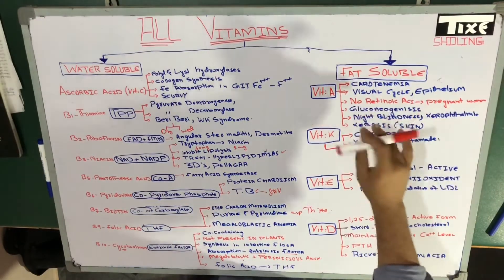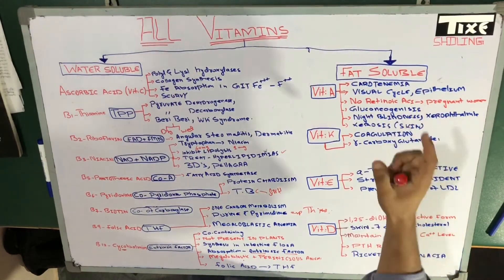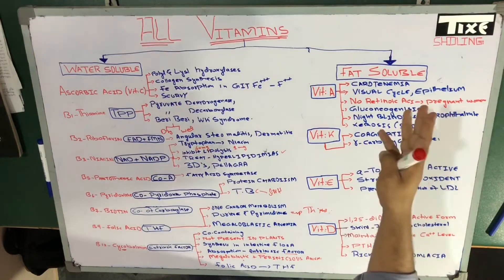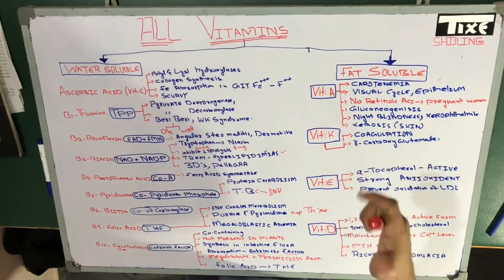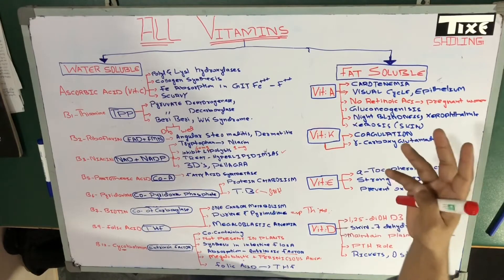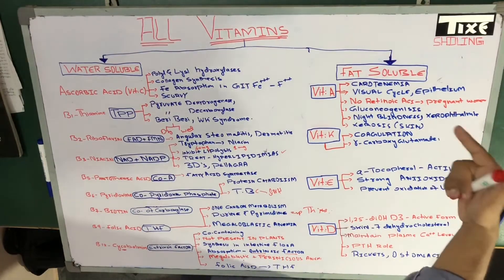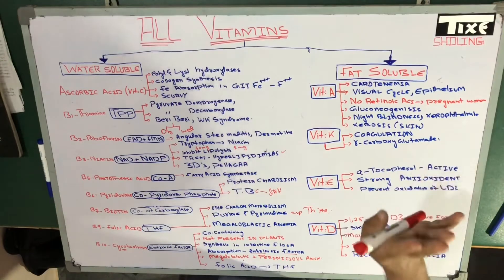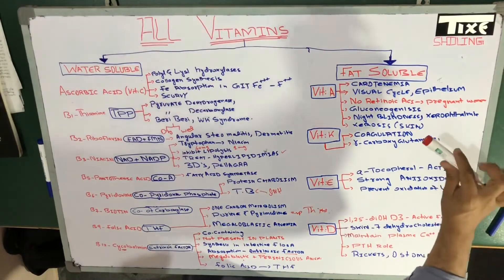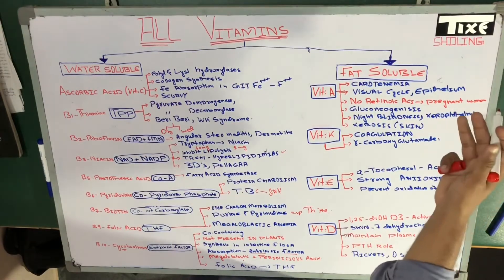Now let's talk about carotenemia. Among the carotenes, beta-carotene is the most efficient precursor of vitamin A. Carotenes do not have any vitamin A activity because they are not the biologically active form. The biologically active form is retinol or retinoic acid. Retinol and retinal — the aldehyde and alcohol forms — are the good active forms of vitamin A. The carotenes are converted to active vitamin under the influence of thyroxin. You have to remember this: beta-carotenes are converted to the active form, retinol, under the influence of thyroxin.